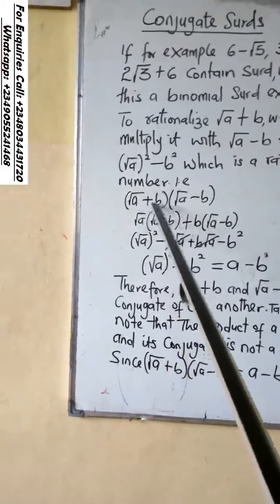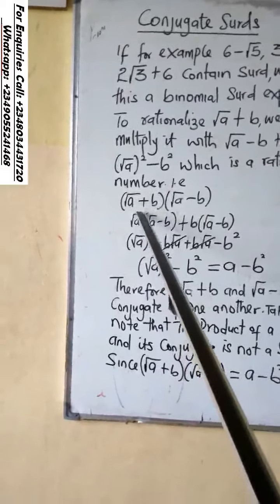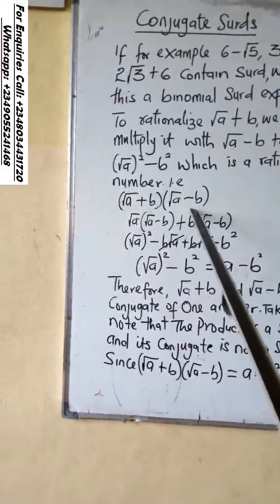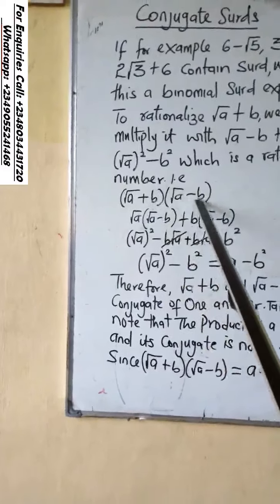If you multiply the conjugate, root a will times everything in the bracket, b will times everything in the second bracket.